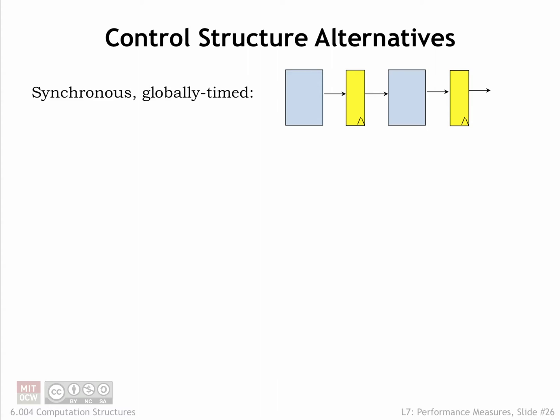We've been designing our processing pipelines to have all the stages operate in lockstep, choosing the clock period to accommodate the worst-case processing time over all the stages. This is what we'd call a synchronous, globally timed system.